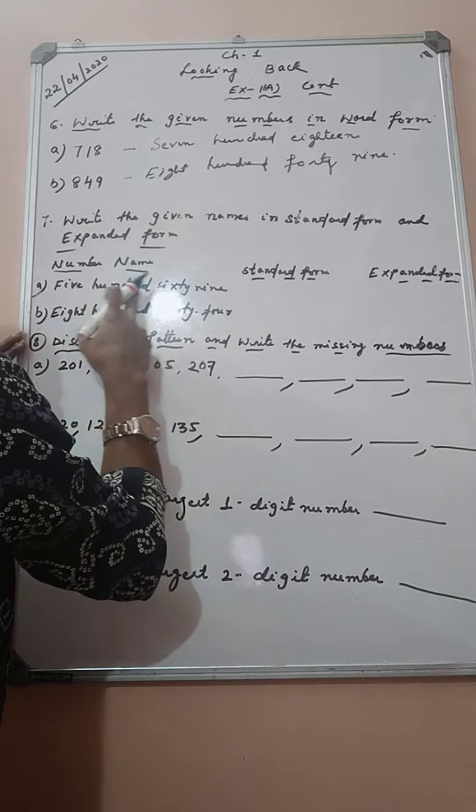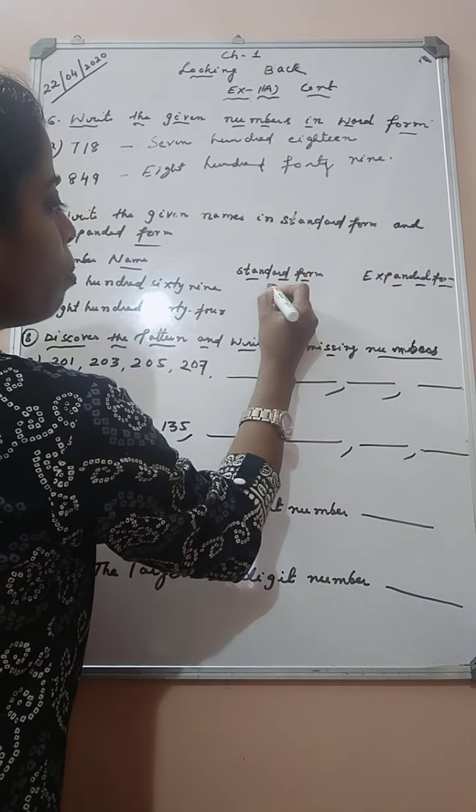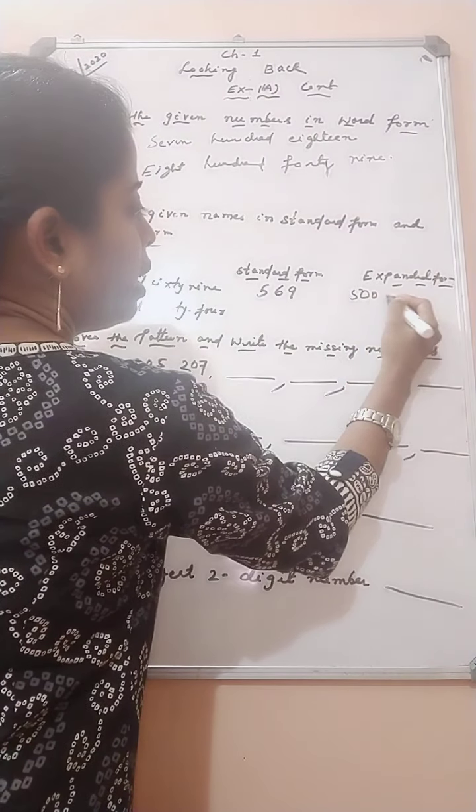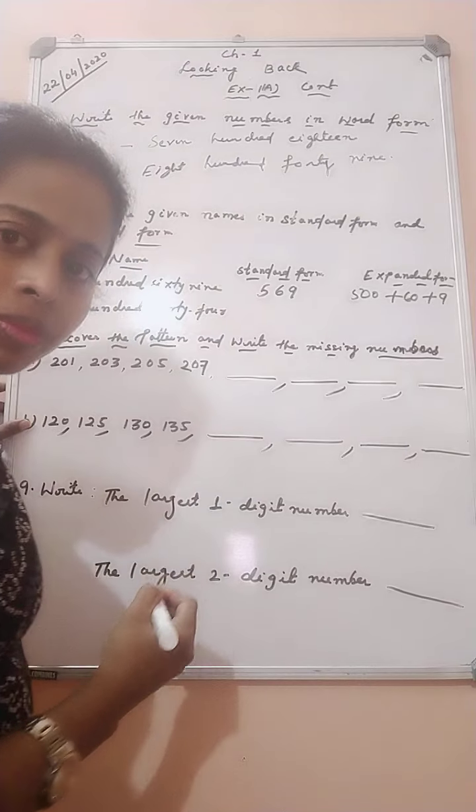Our question is 569. So it can be written in the standard form as 569. Okay, we have to expand this number. 500 plus 60 plus 9. Clear?